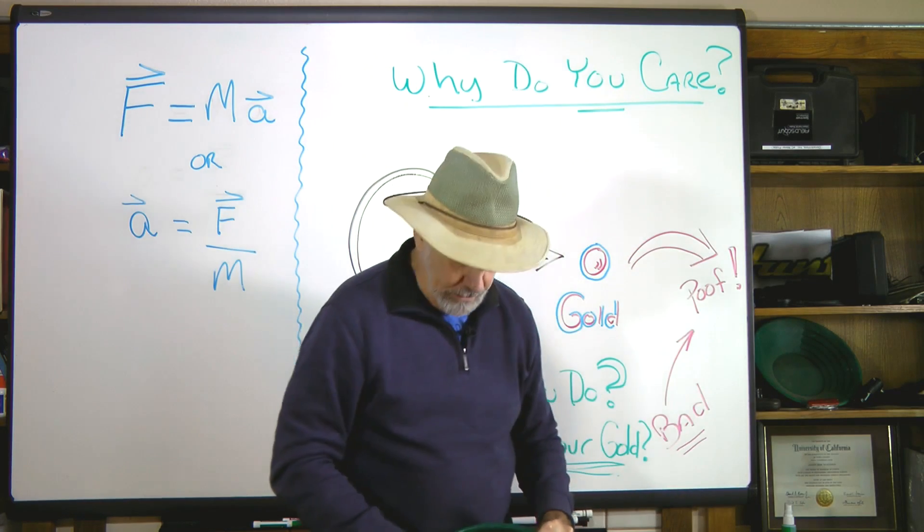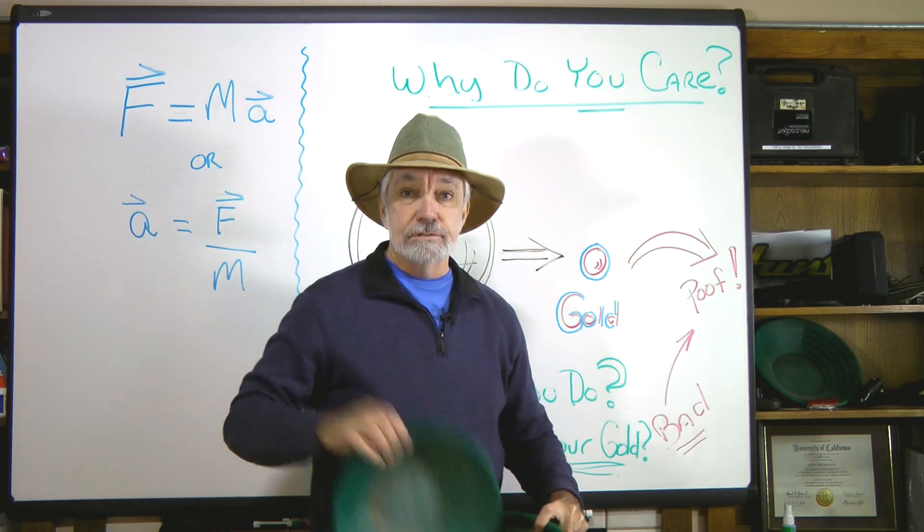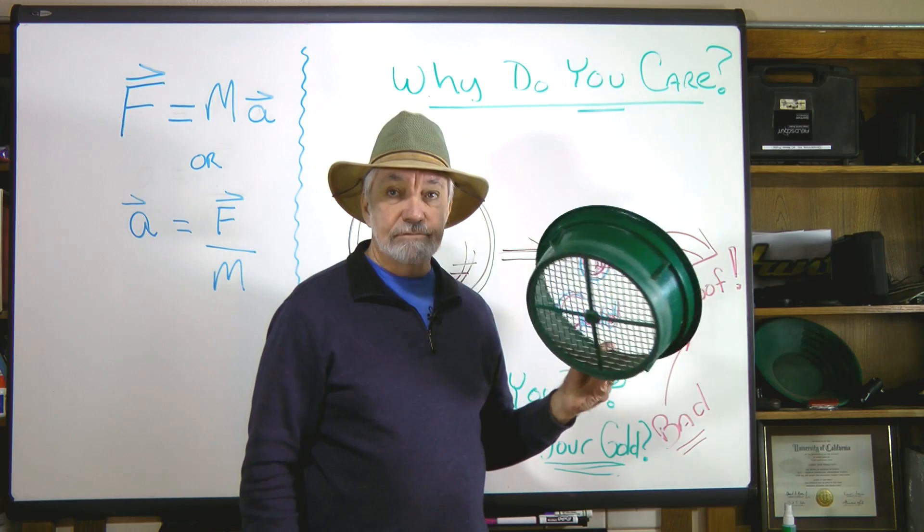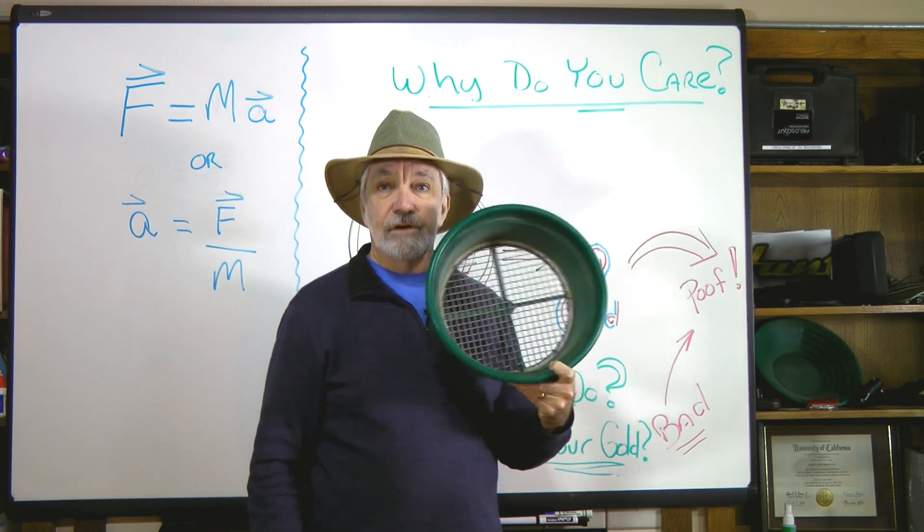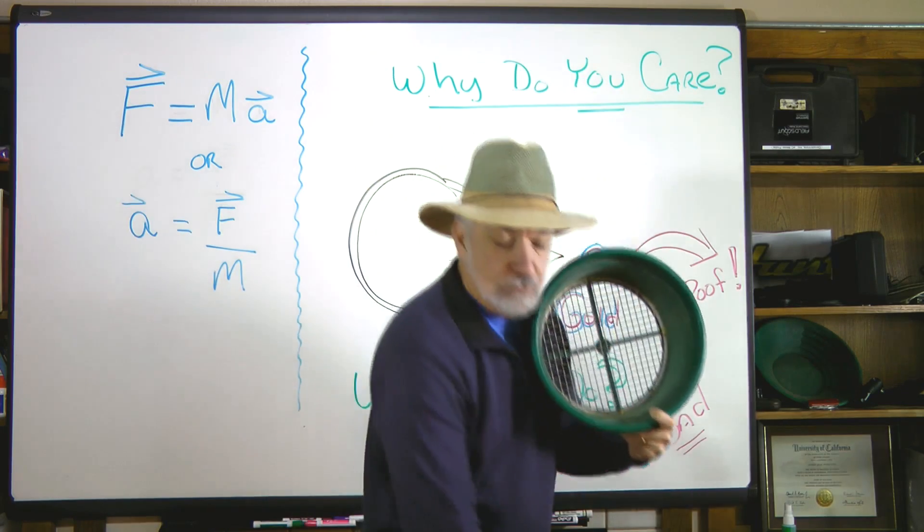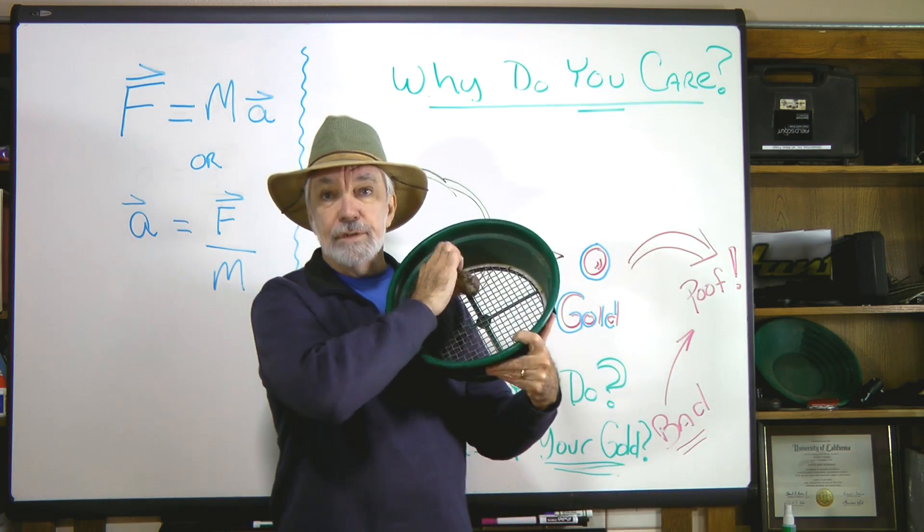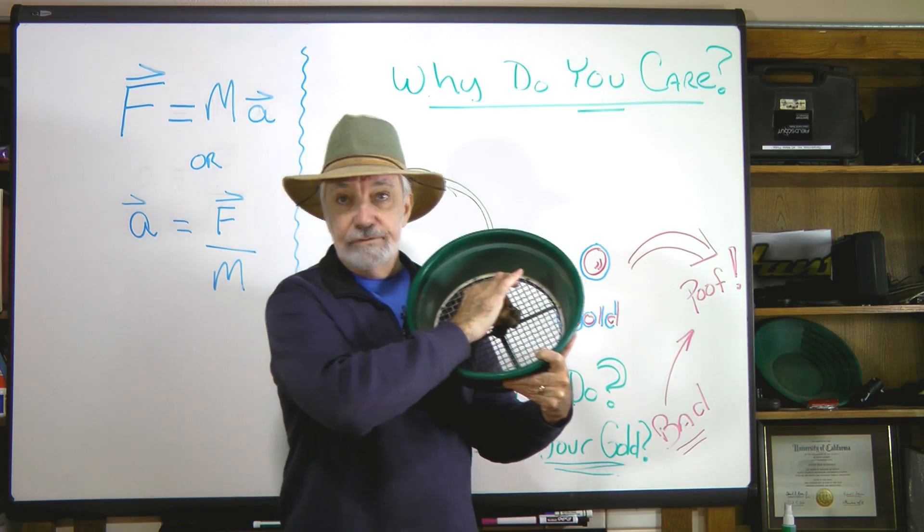So what we have here is a device. Now you've seen this one. This is a gold pan. But this device is called a classifier. A classifier is going to basically take these rocks and sift them so that the bigger ones can't go through the classifier.